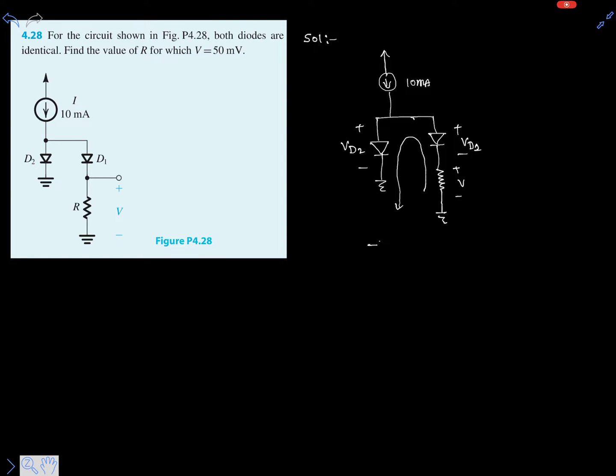And this is the resistor, and it is already given it is V. So if you write the KVL equation in this loop, that is minus V minus VD1 plus VD2 equals to zero. So clearly V equals VD2 minus VD1.